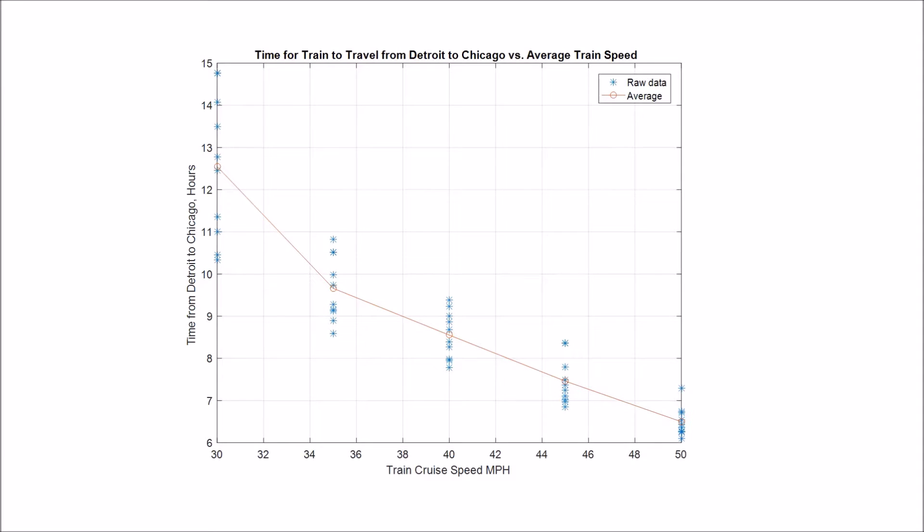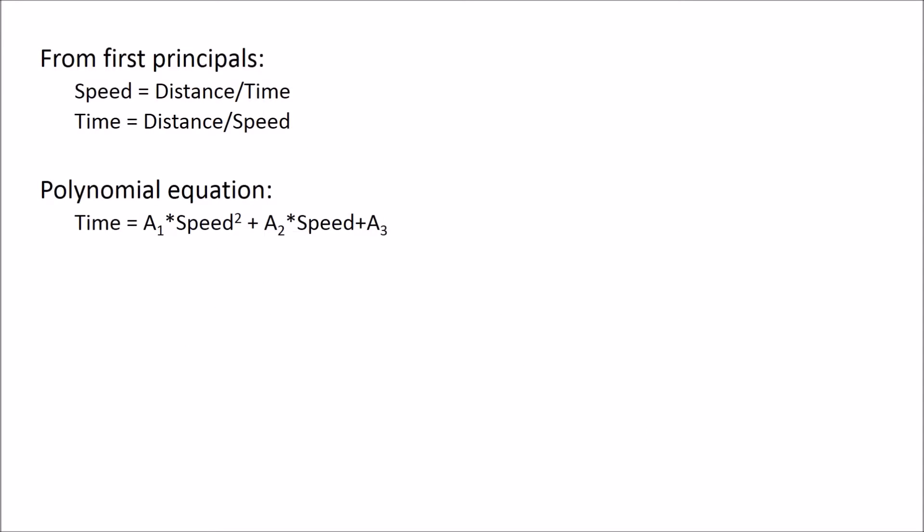We used the polyfit command to fit a line to that data. Initially we just used time as some polynomial and looked at second and third order. We determined that was stupid because this is the equation we really want, the form of the equation we really want.